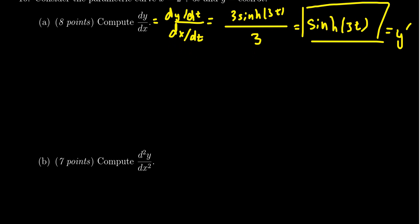we have to take the derivative of y prime with respect to t and divide that by the derivative of x with respect to t. Now we don't just take the second derivative of y with respect to t divided by the second derivative of x with respect to t. We take the derivative of y prime with respect to t and divide that by the derivative of x with respect to t.